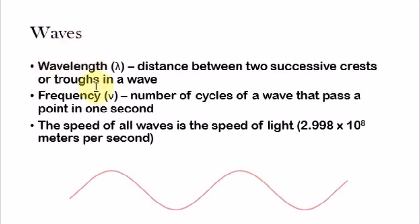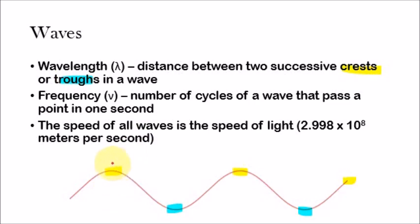Now there are two properties of waves. First: wavelength. Wavelength is the distance between two successive crests or troughs in a wave. A crest is the area at the top of the wave. A trough is the bottom. So the wavelength is simply the distance between two successive troughs — the distance between this and this, for example. Pretty simple.